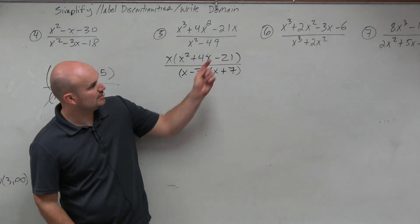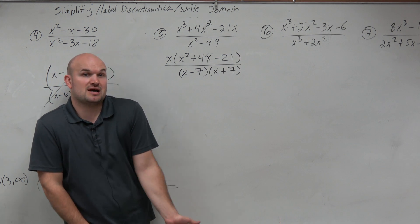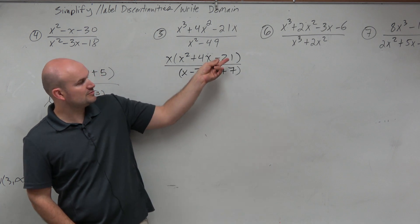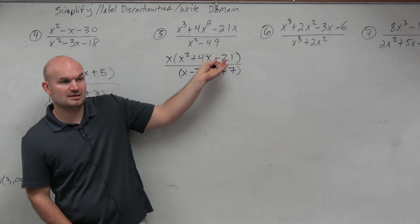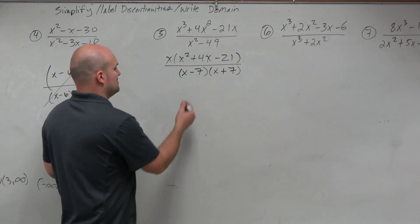Now we need to find two numbers that multiply to give me negative 21 and add to give me 4. I think of all the numbers that multiply to give me negative 21. The most common, I think, is 7 and 3. They do have a difference of 4. So which one should be negative, the 7 or the 3? The middle term needs to be positive, so I want the 3 to be negative and the 7 to be positive.